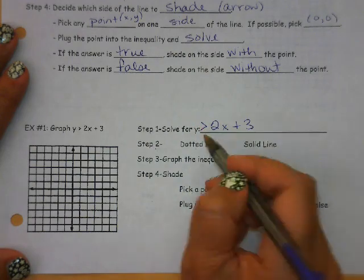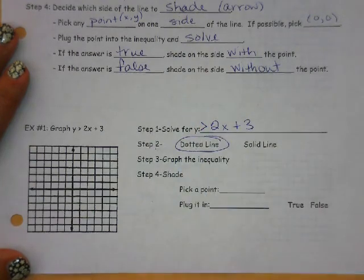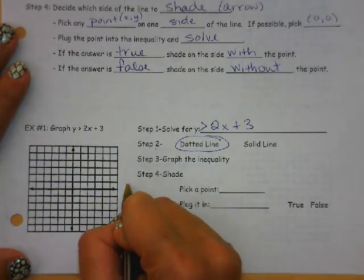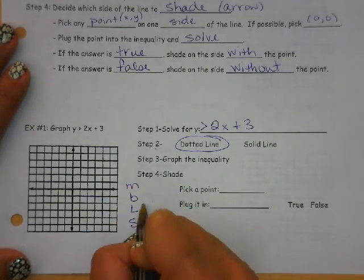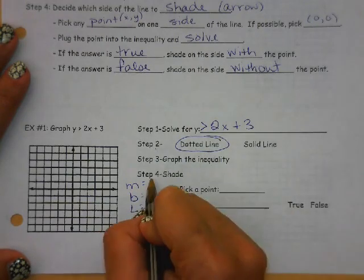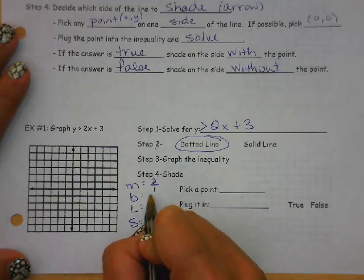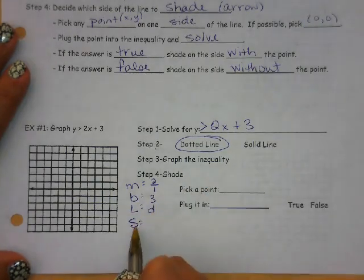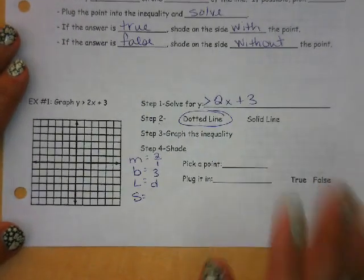This is greater than, not or equal to, so it is a dotted line. I'm going to have you all start writing M, B, L, S, where we are writing down M, which is our slope. My B is 3. My line is dotted. S is going to be shading, and we're going to talk about that piece in just a minute.